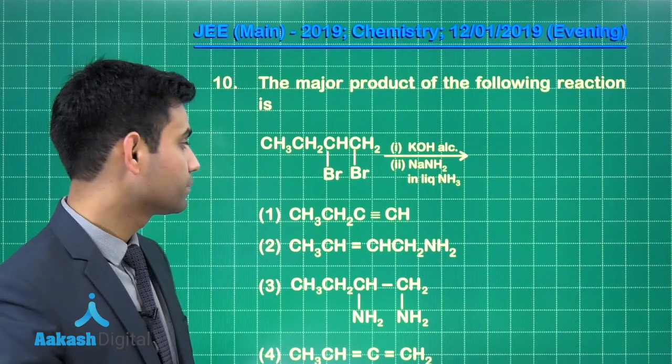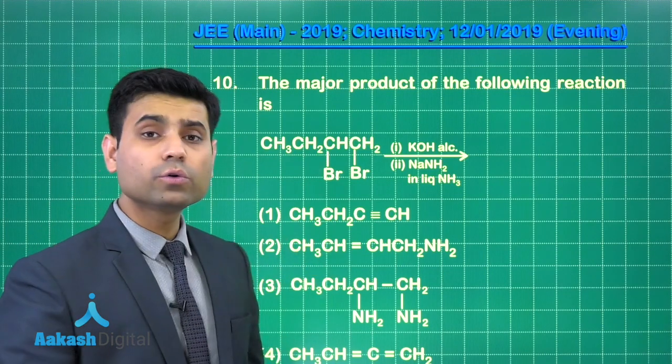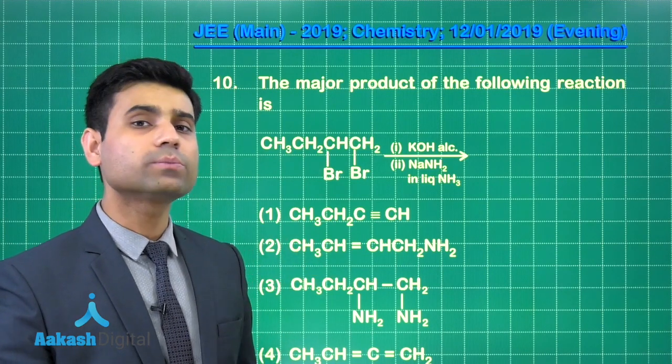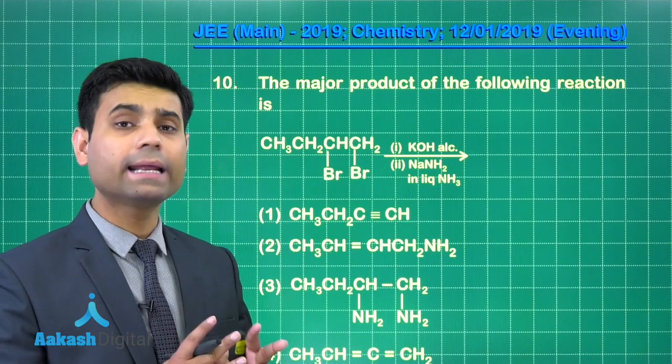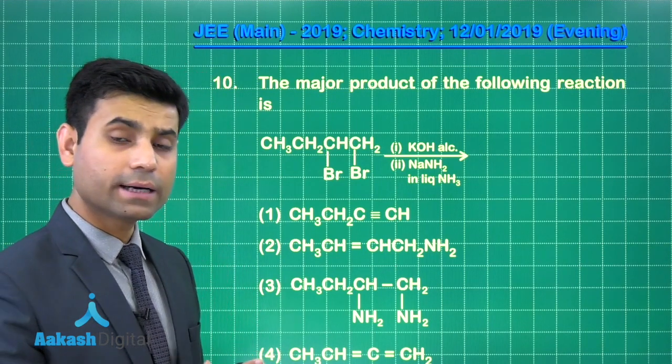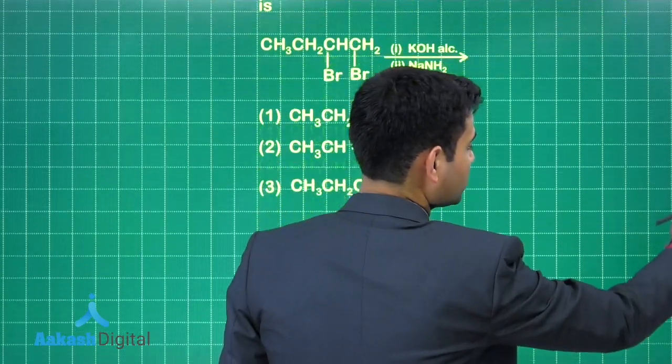Elimination will take place. There are two BR atoms attached to this molecule. So two molecules of HBR will be removed and alkyne will be formed. Let us see what reaction will be taking place.